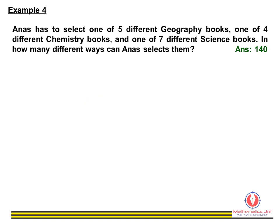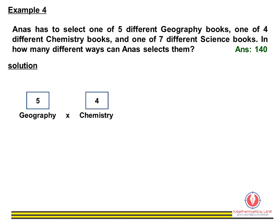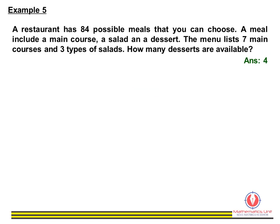Example 4: Ana has to select one out of five geography books, one out of four chemistry books, and one out of seven science books. The number of ways she can select them is five times four times seven, which gives us 140 choices.